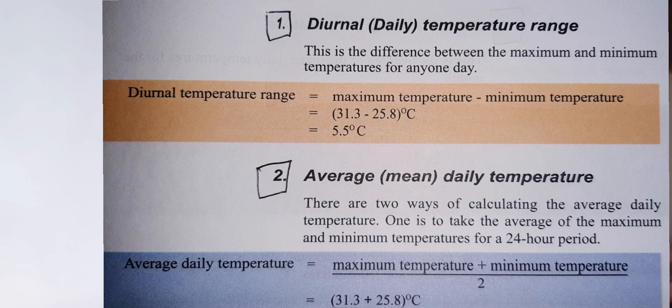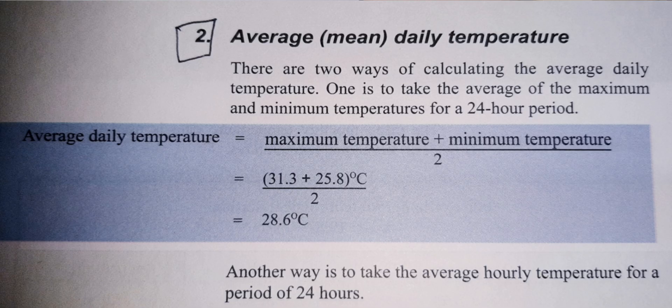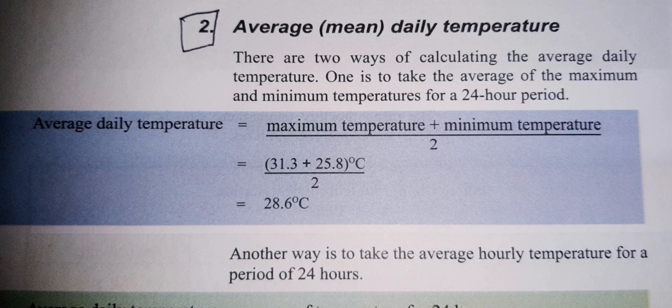If you see the chart, the maximum temperature is 31.3 and the minimum temperature is 25.8. Now you add them and divide by 2. The result is 28.6 degrees Celsius — that is the average.